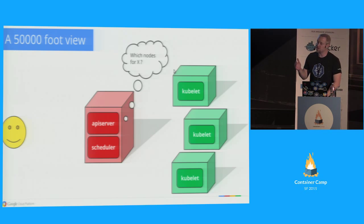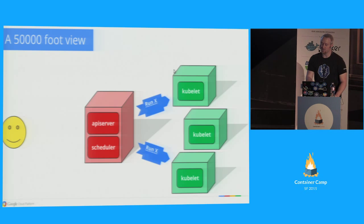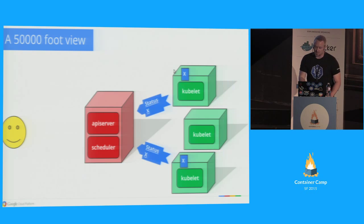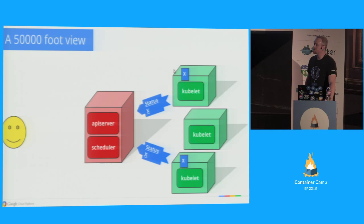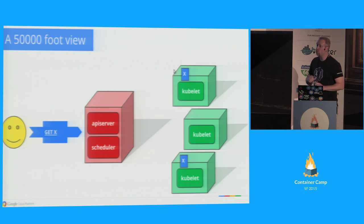Now the API server has to decide: what nodes am I going to put this on? This is scheduling. We have things like constraints, affinity, and resource mapping. The scheduler figures out what nodes should run this job. It makes a decision — you asked for two copies, so it puts them on two nodes. Those nodes do a Docker pull, get the image from the registry, and they're running X. This takes about as long as a Docker pull. The individual machines then report status back to the API server. As a user, you can query what happened to X and get back your status.